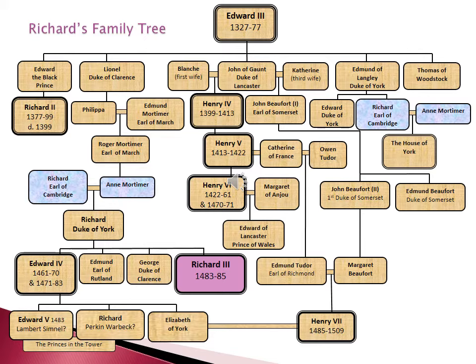Roger Mortimer had a daughter, Anne. Meanwhile, Edmund of Langley, Duke of York, had a younger son, Richard, Earl of Cambridge. Richard married Anne Mortimer, and the couple appear twice in the family tree. Following Edmund of Langley's descendants on the right hand side, his eldest son was Edward, Duke of York, who died at the Battle of Agincourt without having had any children. Richard, Earl of Cambridge, died the same year, so it was Richard of Cambridge and Anne Mortimer's son, Richard, who became Duke of York.